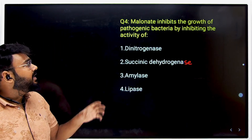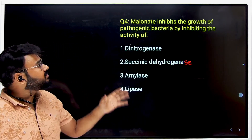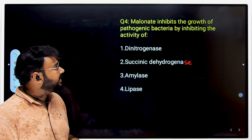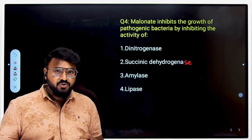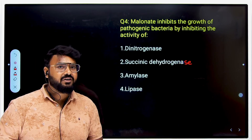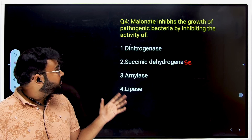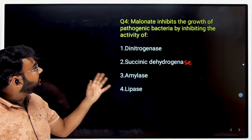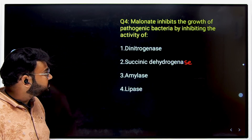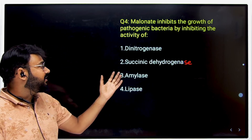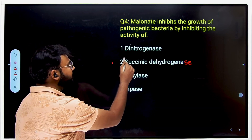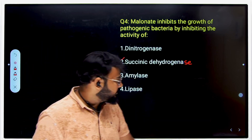The next question: malonate inhibits the growth of pathogenic bacteria by inhibiting the activity of which enzyme? The options are dinitrogenase, succinic dehydrogenase, amylase, or lipase. This question comes from competitive enzyme inhibition. The correct answer is the second option: succinic dehydrogenase.